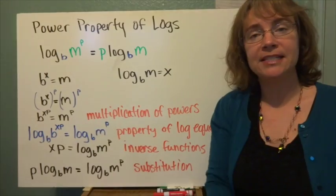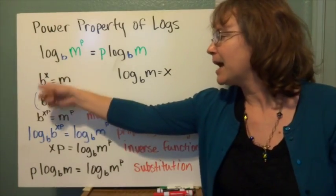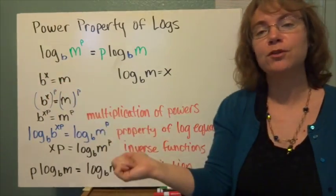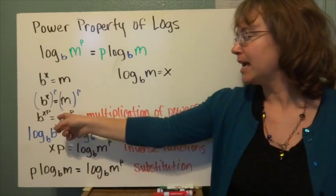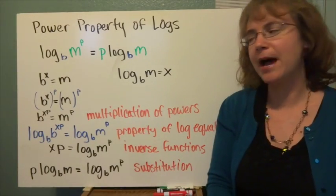Now I'm going to use properties of exponents. If I have a power to a power, that's just the powers multiplied by each other. So I have b to the xp, and that equals m to the p. That's multiplication of powers.